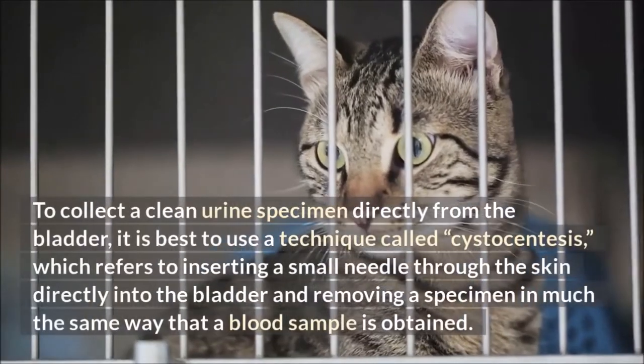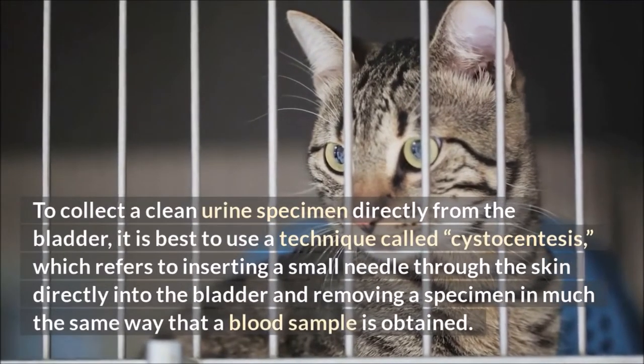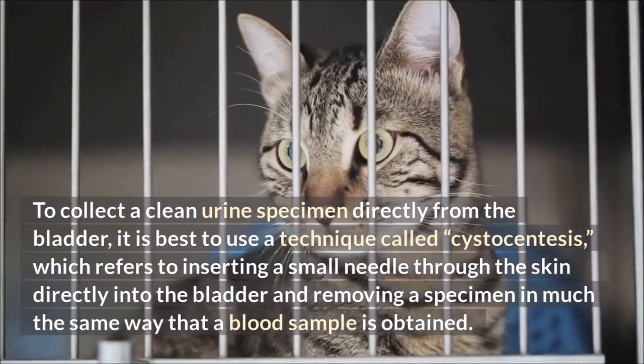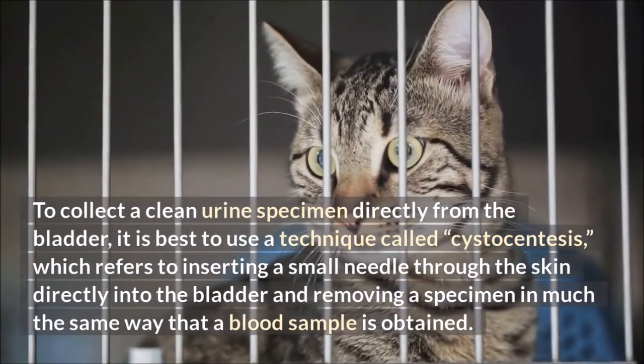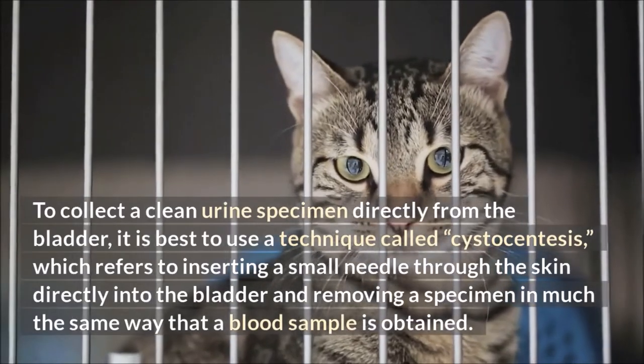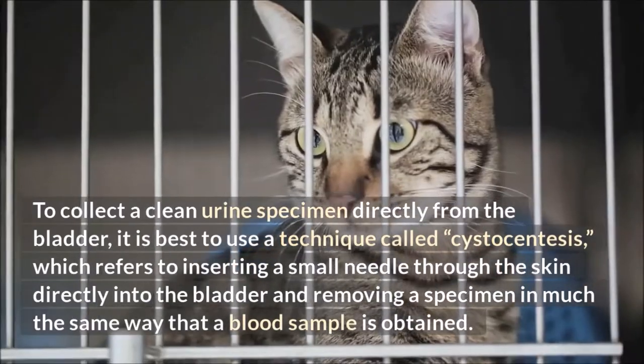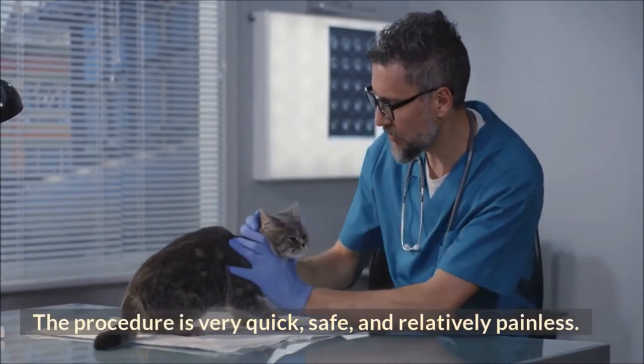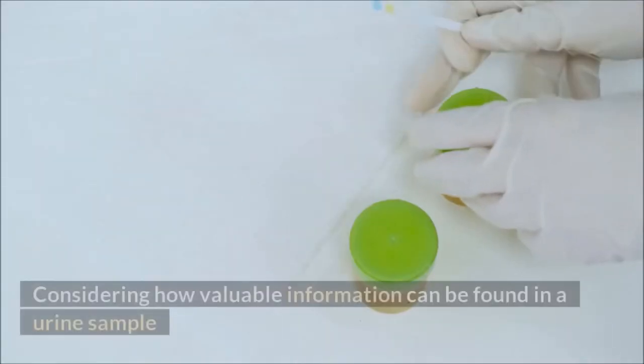To collect a clean urine specimen directly from the bladder, it is best to use a technique called cystocentesis, which refers to inserting a small needle through the skin directly into the bladder and removing a specimen in much the same way that a blood sample is obtained. The procedure is very quick, safe, and relatively painless.